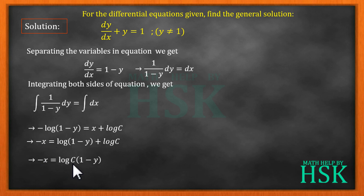Now here no base is given to us, so this means that base is equal to e. Now we are going to convert this equation from log form to exponential form, so this can be written as e to the power of minus x is equal to c into 1 minus y.